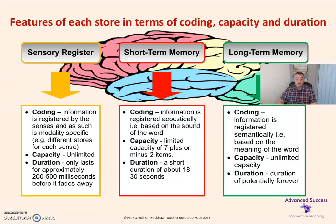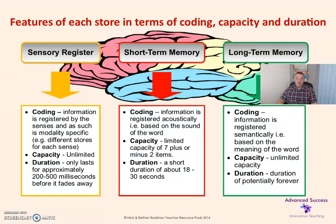We'll start off with sensory register. In terms of coding, the sensory register is coded in terms of modalities, i.e. the five senses — therefore 'modality specific' is the term used in the AQA specification. The capacity is said to be unlimited and the duration is between 200 and 500 milliseconds.